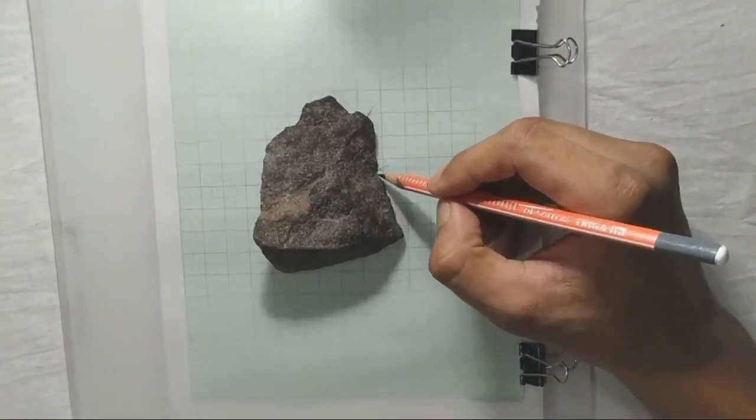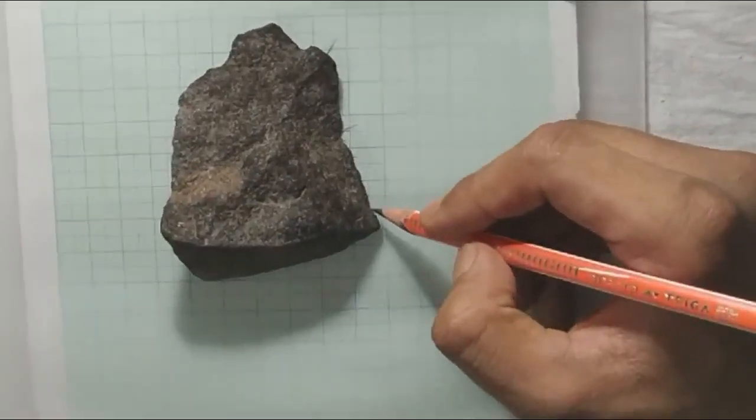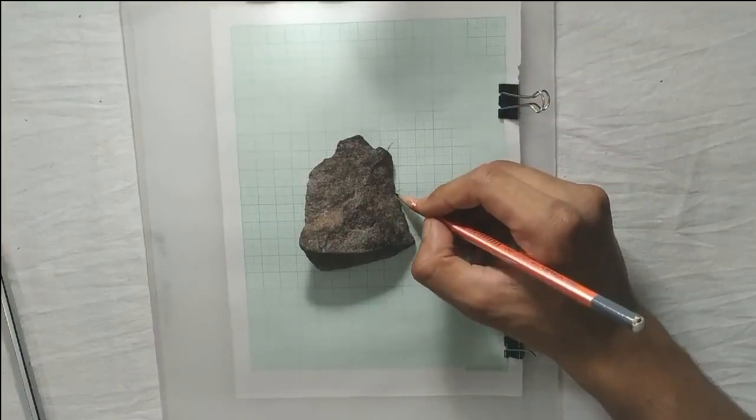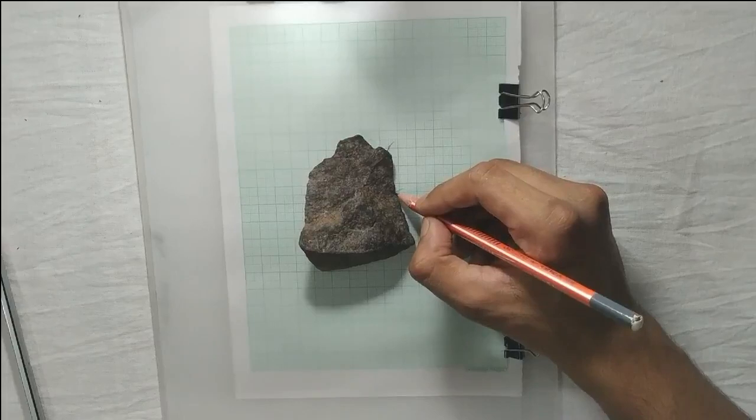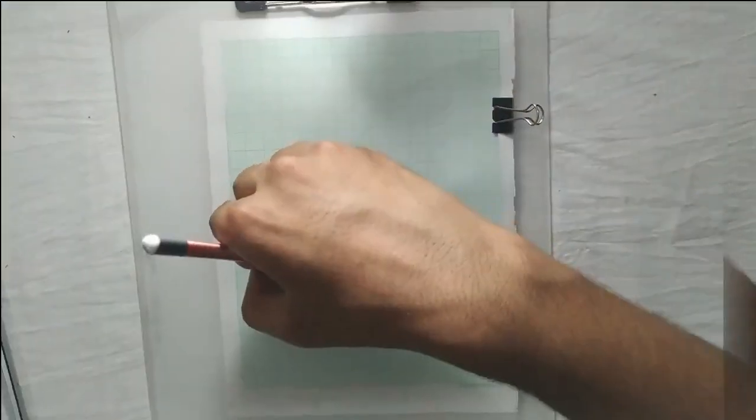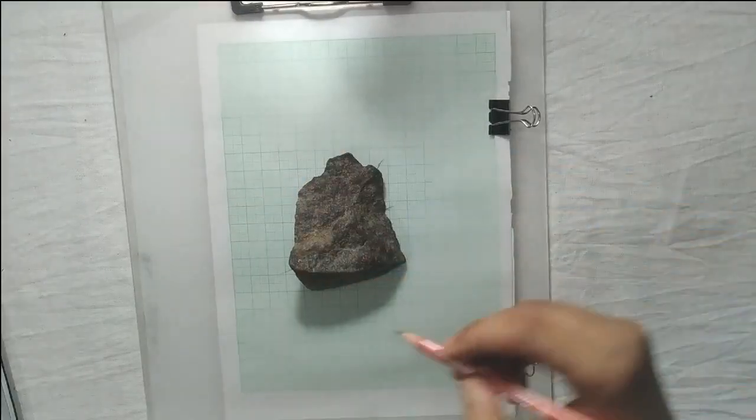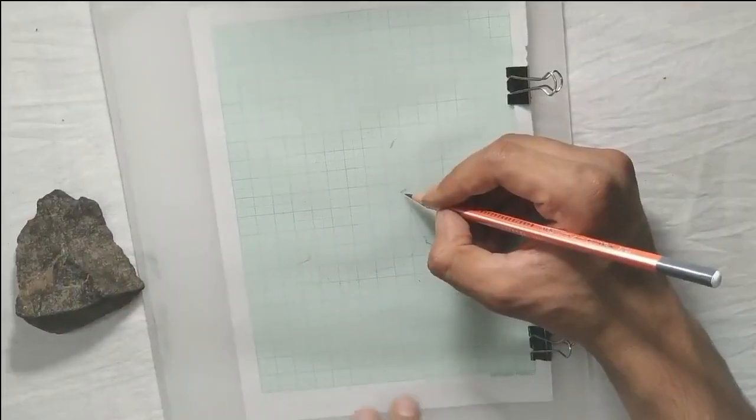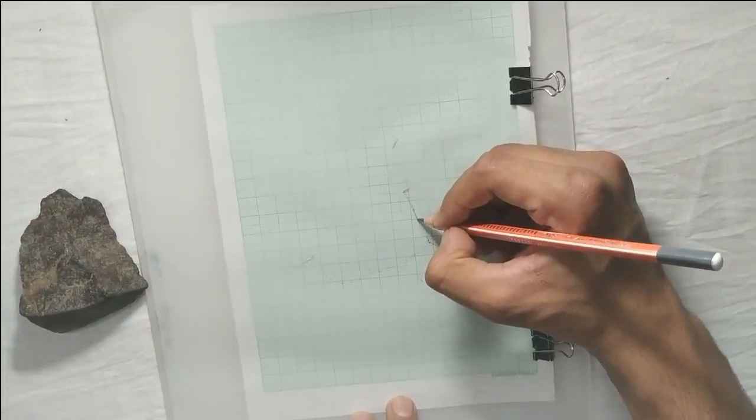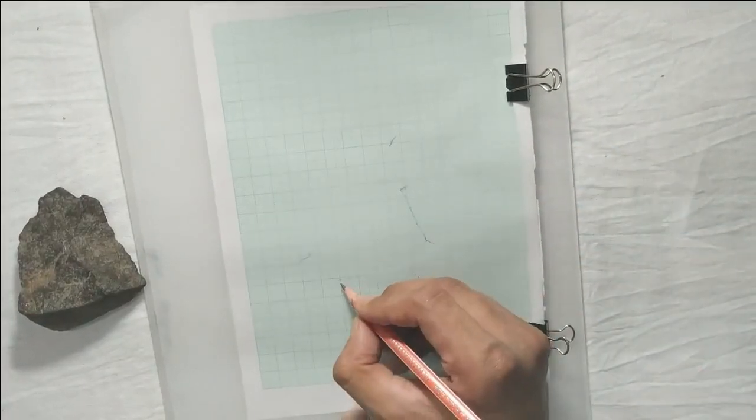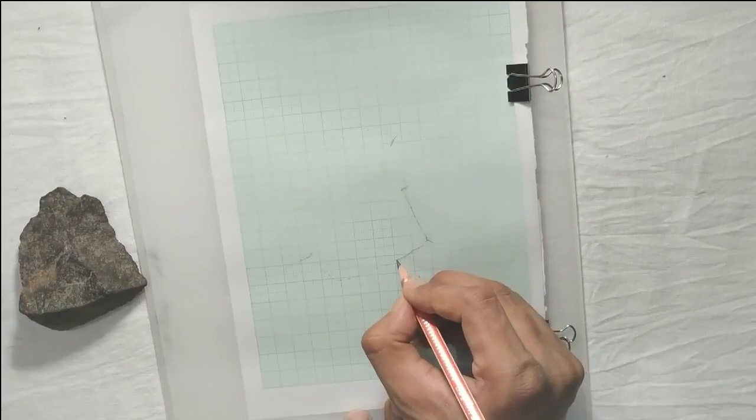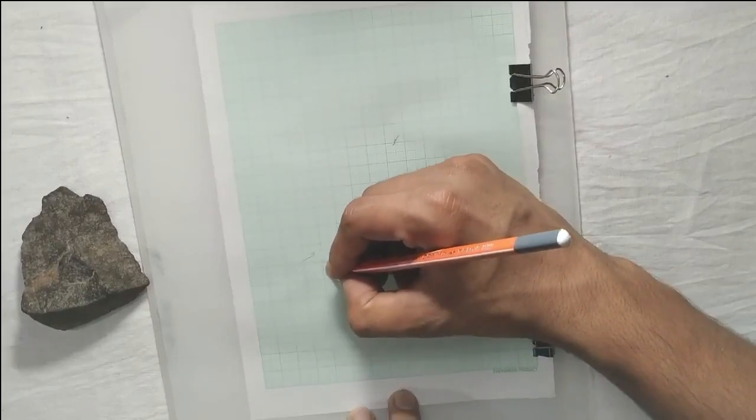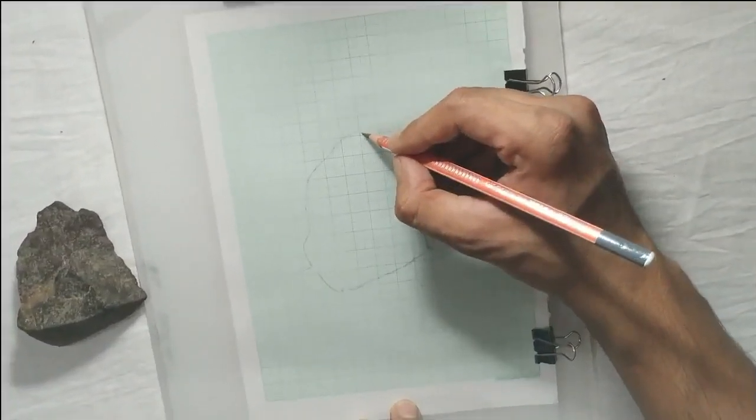The dots should be marked around the border and lines should be used to represent scars wherever present on the perimeter. This will be helpful while drawing the inner portion of the stone tool. To complete drawing the perimeter of the stone tool, draw the dots, and this gives us the perimeter of the dorsal surface.